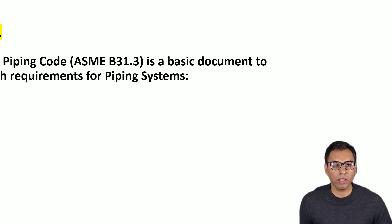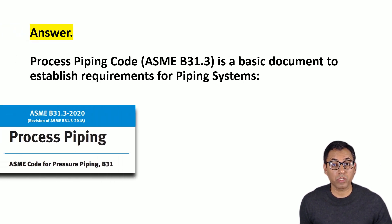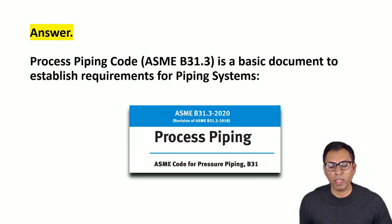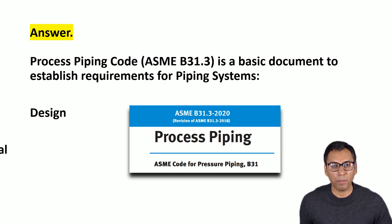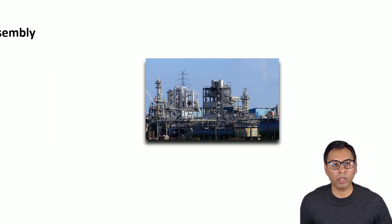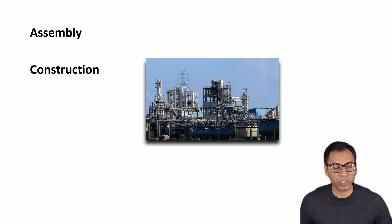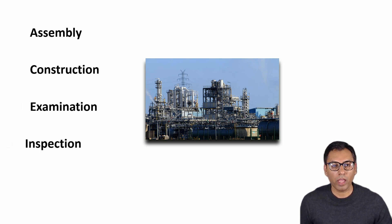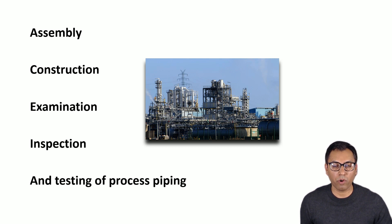Process piping is a basic document to establish the requirements for piping systems. These basic requirements are about design, material, and fabrication. ASME B31.3 also covers requirements like assembly, construction, examination requirements for process piping, and inspection and testing of process piping.